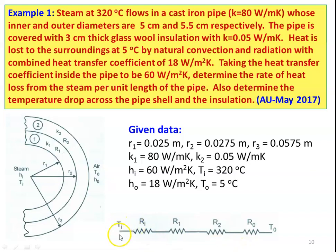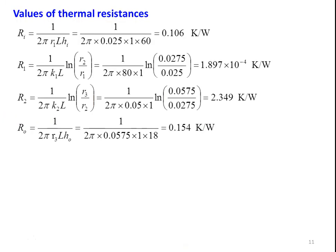The thermal circuit has four resistances: Ri (convection from steam), R1 (conduction through pipe), R2 (conduction through insulation), and Ro (convection to surrounding air). Given data: r1 = 0.025 m, r2 = 0.0275 m, r3 = 0.0575 m (adding 3 cm insulation), k1 = 80 W/m·K, k2 = 0.05 W/m·K, hi = 60 W/m²·K, ho = 18 W/m²·K. Calculating Ri = 1/(2π·r1·hi) = 1/(2π·0.025·1·60) = 0.106 K/W.